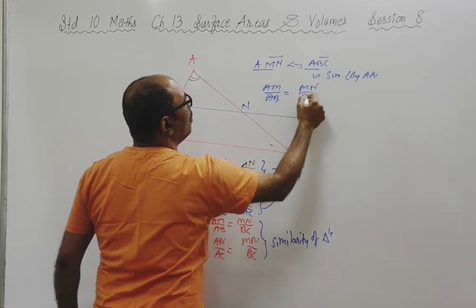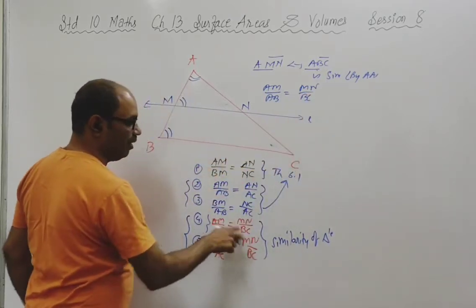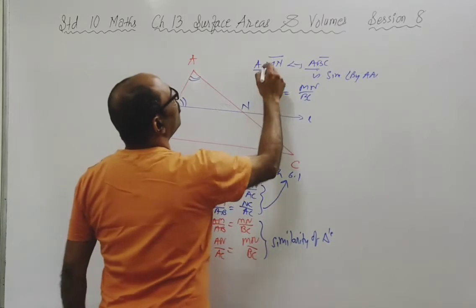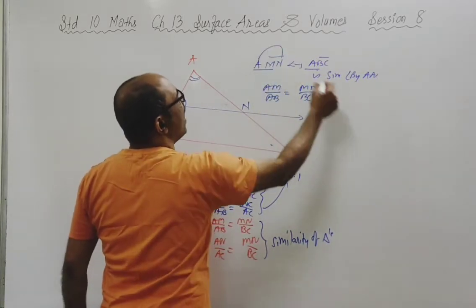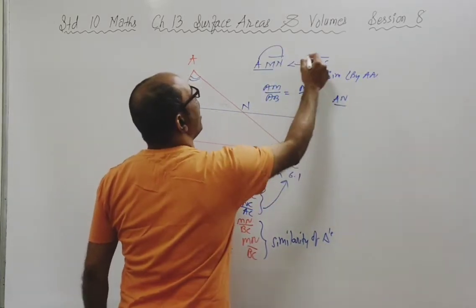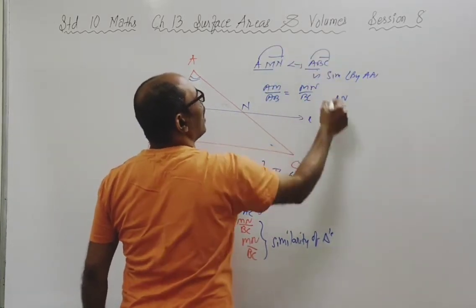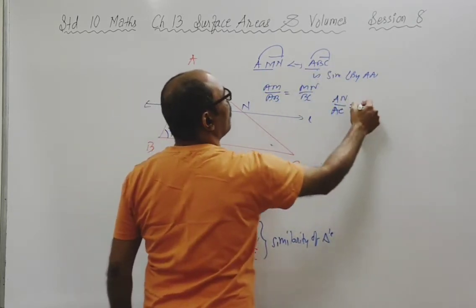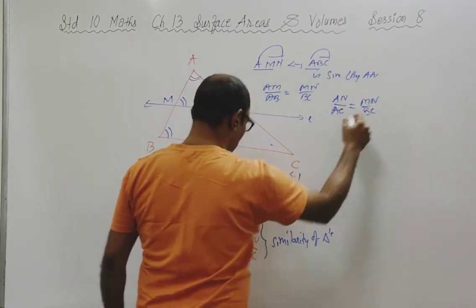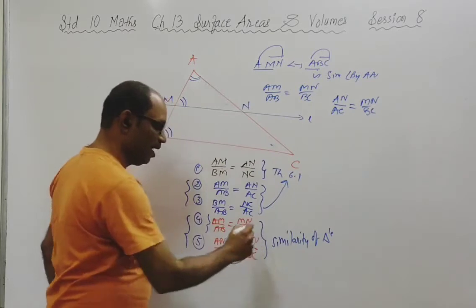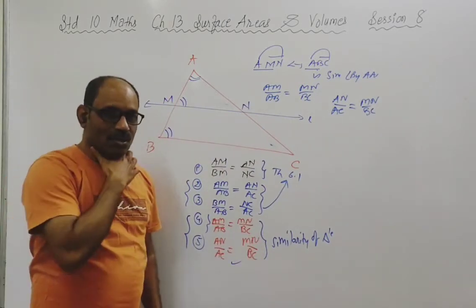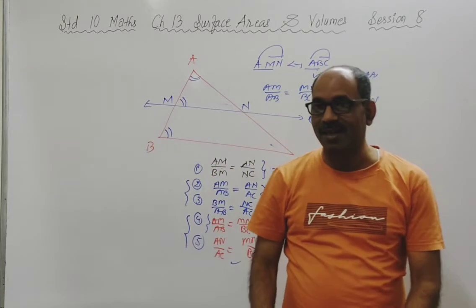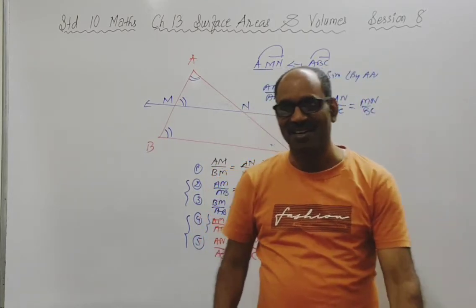AM upon AB is equal to MN upon BC, and similarly AN upon AC is equal to MN upon BC. We have just recalled this result because in our derivation we will need it.